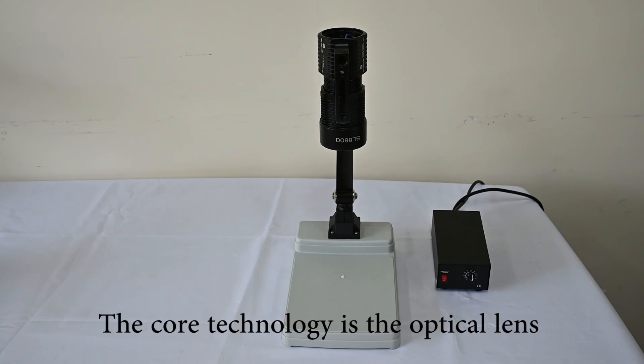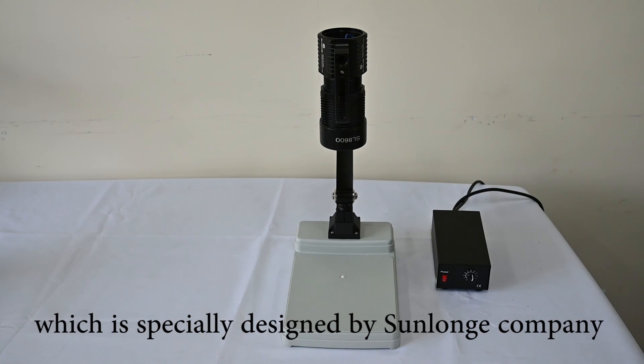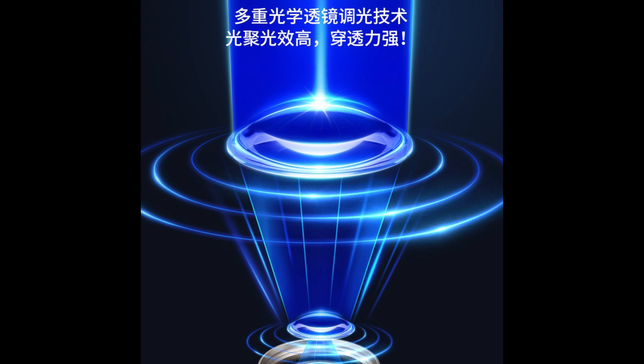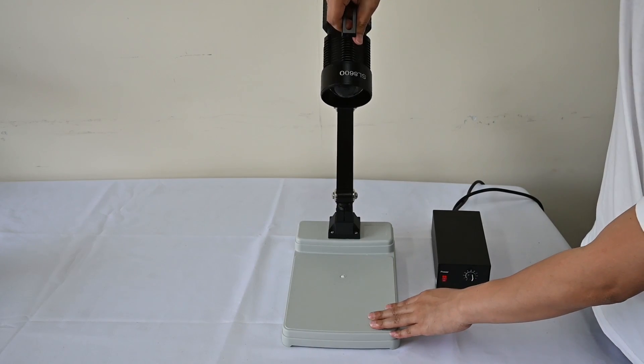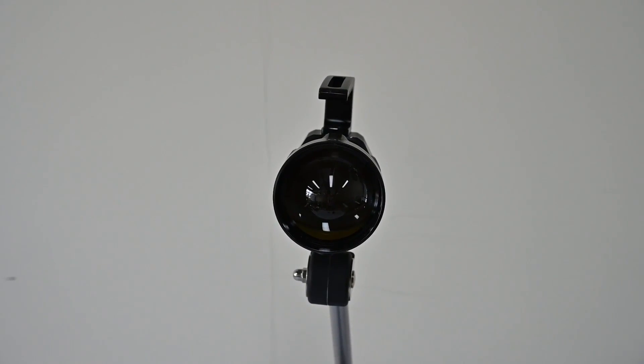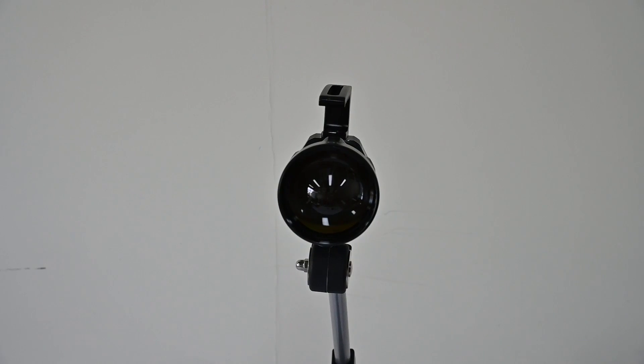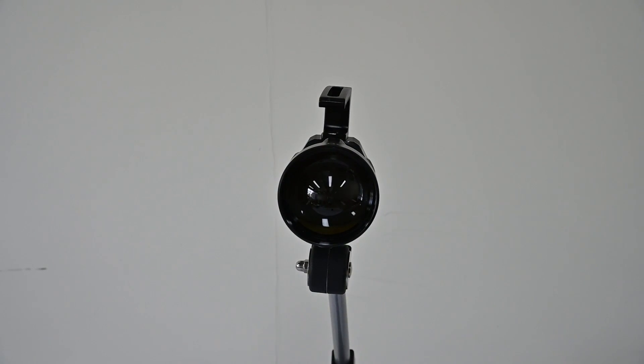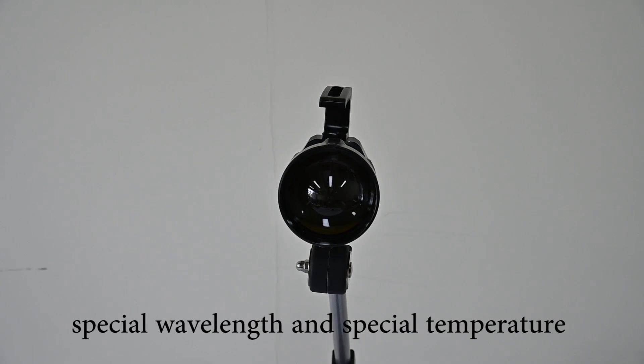The core technology is the optical lens which is specially designed by Sano company. This is the lens structure. We use optical lens. Through the conversion of optical lens, we can make inspection lamps with special wavelengths and special color temperature.